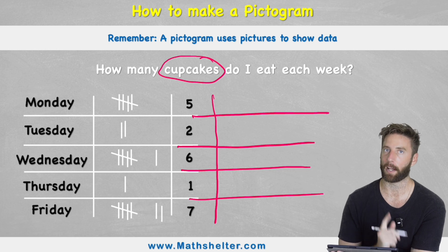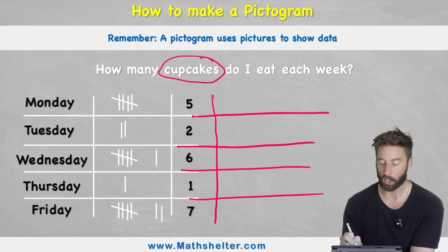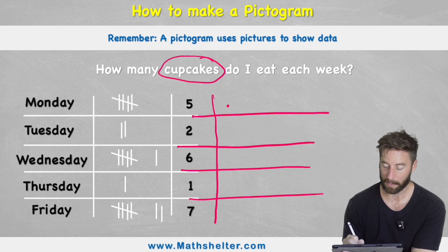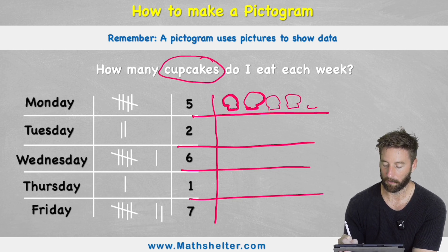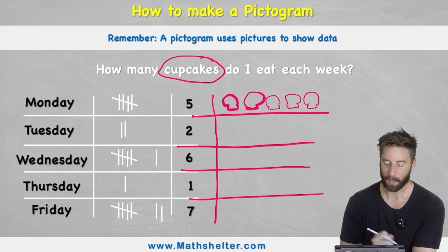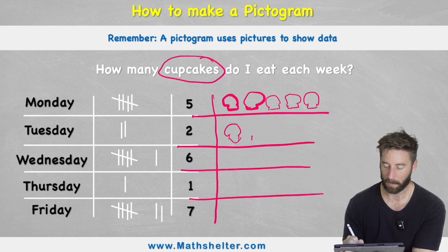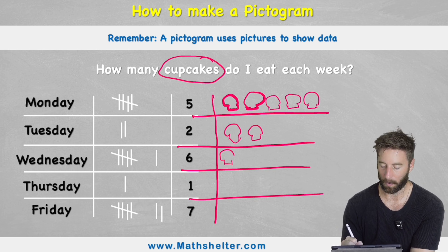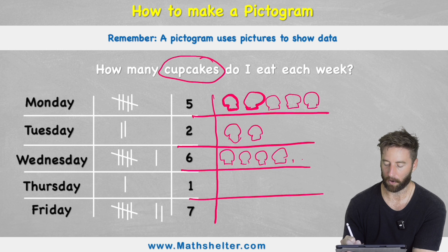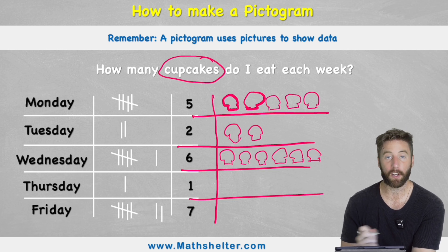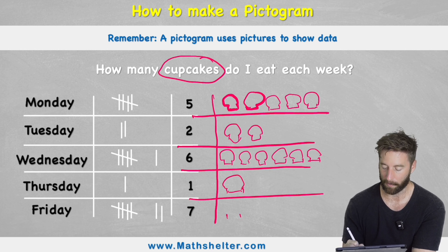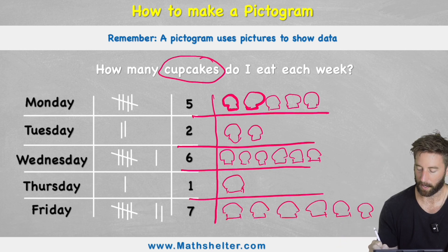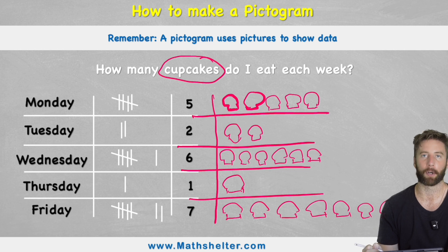You're going to have to forgive me because I am no artist. So in this case I could show on Monday I had five cupcakes — one, two, three, four and five. Okay, they are worse than I was expecting. Tuesday I only had two — one, two. Wednesday I had six — one, two, three, four, five, six. Thursday I only had one, my healthy day. And Friday I had a whopping seven — five, six, and they are even coming over my face because I want to eat them so much. Seven.